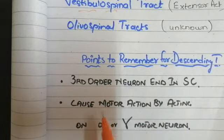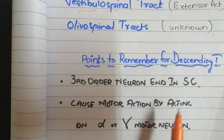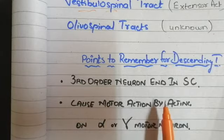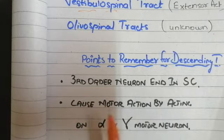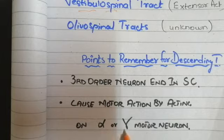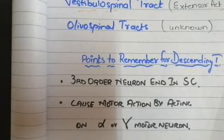Another important point is that these tracts cause motor action by acting on the alpha or gamma motor neurons. The third-order neuron ending in the spinal cord terminates by synapsing with a lower motor neuron, which acts on the alpha or gamma motor neuron — that lower motor neuron ultimately acts on the muscle to produce contraction or a motor response.